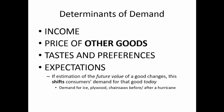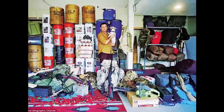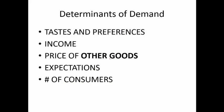Expectations — estimation of the future value of a good — changes demand for that product today. It's a pretty observable phenomenon. Before, during, and after hurricanes you see shifts in demand for articles that become extremely useful both in preparing for a storm and cleaning up after. Another example: demand for ammo and canned food if people are expecting a zombie apocalypse. If you really are expecting one, you know those goods will be scarce, so you want to stock up on them now.